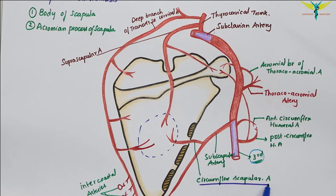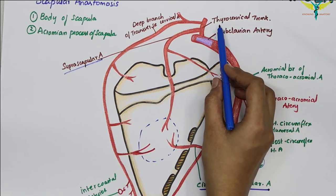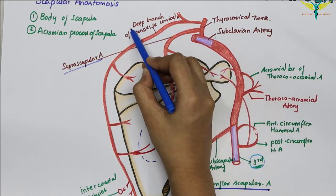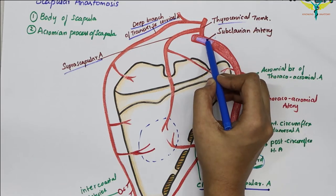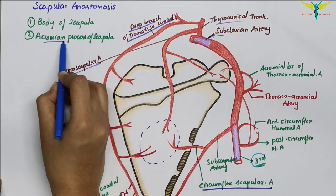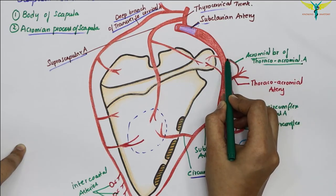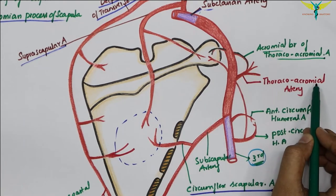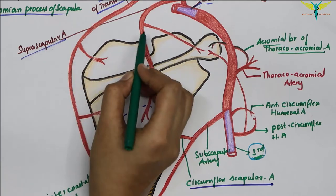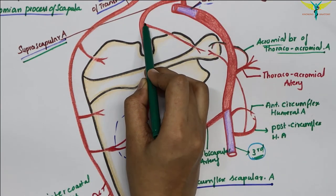To revise: the anastomosis around the body of the scapula takes place between the circumflex scapular artery (a branch of the subscapular artery from the third part of the axillary artery), the suprascapular artery (a branch of the thyrocervical trunk from the first part of the subclavian artery), and the deep branch of the transverse cervical artery (also a branch of the thyrocervical trunk from the first part of the subclavian artery). The anastomosis at the acromion process of the scapula occurs between the acromial branch of the thoracoacromial artery and a branch from the suprascapular artery, which is from the thyrocervical trunk from the first part of the subclavian artery.